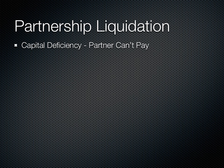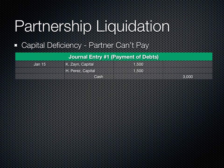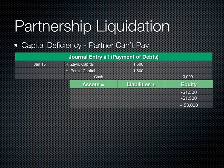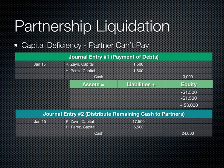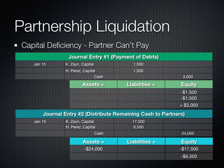So what happens if Rashid cannot pay his capital deficiency? Then Zane and Perez will be on the hook for whatever Rashid owes the business. In this case, journal entry one shows the redistribution of the outstanding debt to the remaining capital accounts of Zane and Perez, and journal entry two shows the distribution of the remaining cash from their capital accounts.